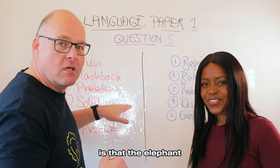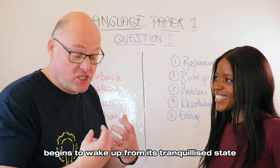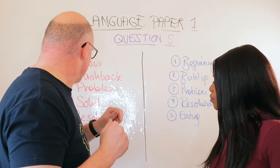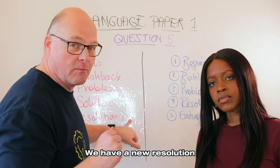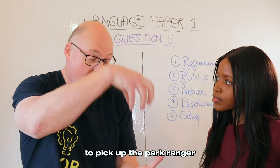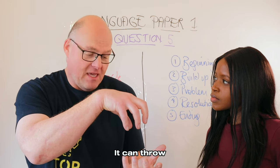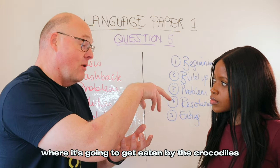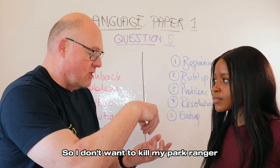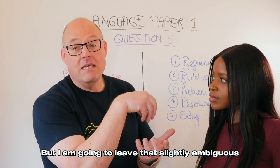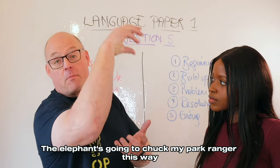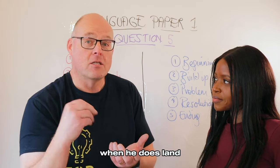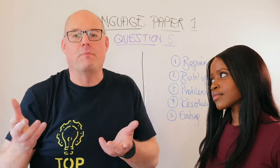The solution is that the elephant begins to wake up from its tranquilized state, and therefore the park ranger doesn't have to keep holding on to its trunk. But we have a new resolution — my elephant is going to use its trunk to pick up the park ranger, and the elephant has a choice: it can throw the park ranger to safety on one side, or throw him towards the crocodiles. I don't want to kill my park ranger, but I'm going to leave that slightly ambiguous. I'm going to leave my park ranger in midair — because I can.